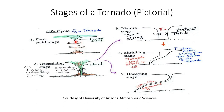Here are the stages of a tornado graphically, courtesy of the University of Arizona Department of Atmospheric Sciences. In the dust swirl stage, notice how the funnel itself is not completely visible touching the ground yet. One of the first clues that tips us off to a tornado is seeing dust or dirt kicked up at the surface, and things perhaps being picked up by the wind — like roofs on houses or various structures.